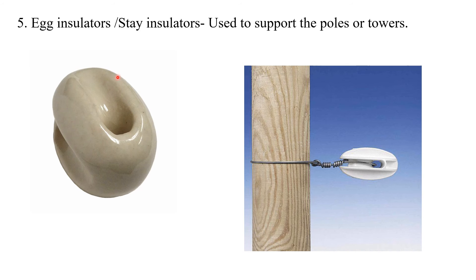The next type of insulator is the egg insulator or stay insulator. They are used to support the poles or towers. These are the major types of insulators used in overhead transmission systems.